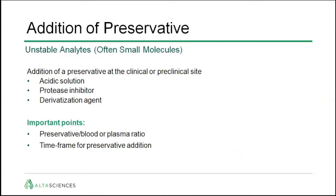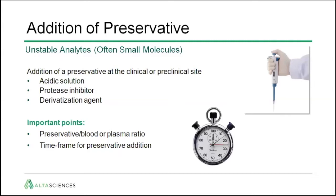Addition of a preservative: there are unstable analytes, often small molecules, where adding a preservative at the clinical or preclinical site may be required. This preservative could be an acidic solution, a protease inhibitor, or a derivatization agent. The important points will be to determine the preservative-to-blood or plasma ratio required to preserve the molecule, and also the timeframe in which you have to add the preservative — that is, the stability of the analyte without preservative.